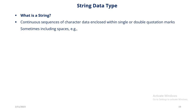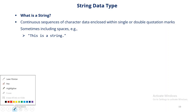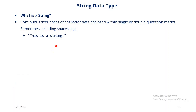Let's begin to talk about data types. We will begin with the string data type because it is very common. What is a string? Strings are continuous sequences of characters included within single or double quotation marks, sometimes including spaces. For example, 'This is a string' enclosed in double quotes. 'This is also a string' in single quotes.